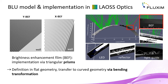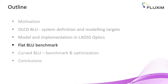As with the domes and cuboids, these shapes are defined in the flat geometry and are then transferred to the curved geometry via bending transformation within the topography part of the Laos tool. In the following, the model is validated by application to a flat backlight unit in comparison with corresponding measurement data.